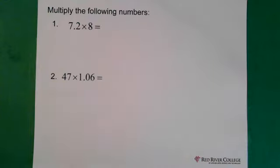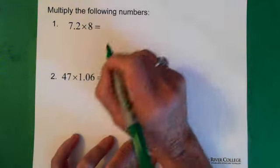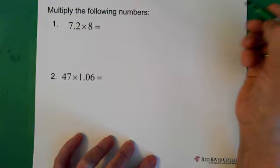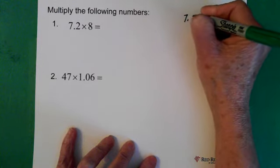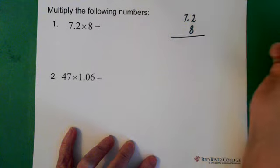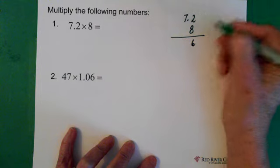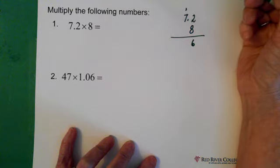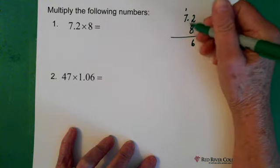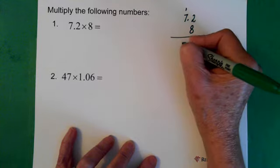Okay, so here we have some questions, some decimal numbers that we're multiplying. First one, 7.2 times 8. We take our 8, multiply it by the 2, we get 16. Put the 1 up here. And 8 times 7 is 56. We add the 1 and we get 57.